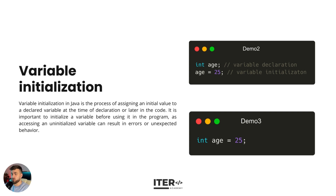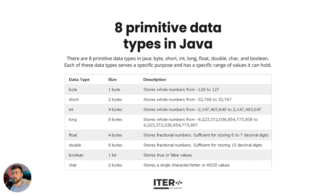We can rewrite this in a single line: int h = 25, as shown in demo 3. There are eight primitive data types in Java: byte, short, int, long, float, double, char, and boolean. Each of these data types serves a specific purpose and has a specific range of values it can hold. On the current screen you can see the list of all primitive data types, their sizes, and their ranges of values.